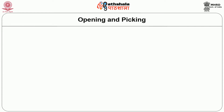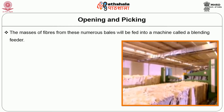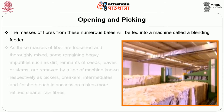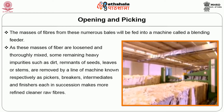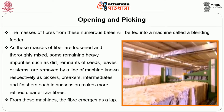The first step is opening and picking. The masses of fibers from numerous bales are fed into a machine called a blending feeder. As these masses of fibers are loosened and thoroughly mixed, some remaining heavy impurities such as dirt, remnants of seeds, leaves or stems are removed by a line of machines known respectively as pickers, breakers, intermediates and finishers. Each in succession makes more refined, clearer raw fibers. From these machines, the fibers emerge as lap.